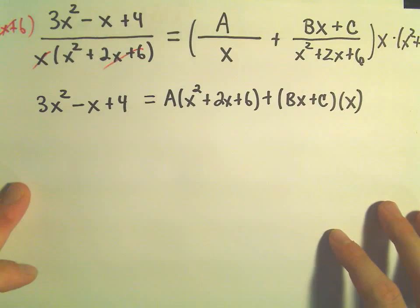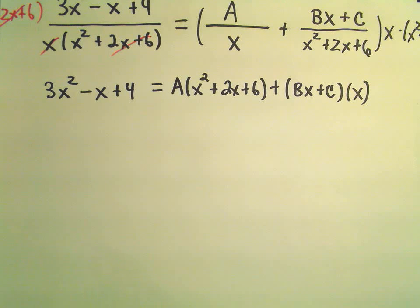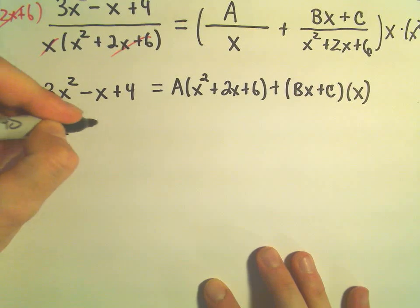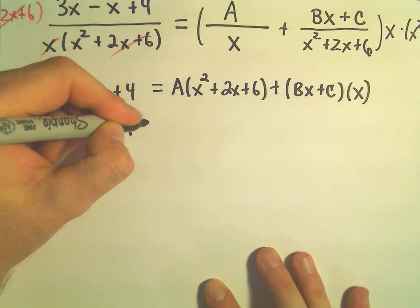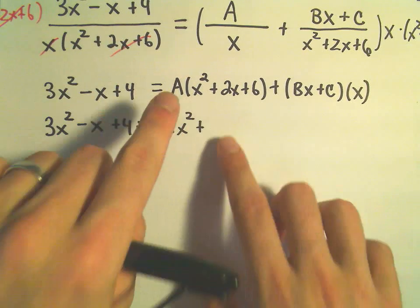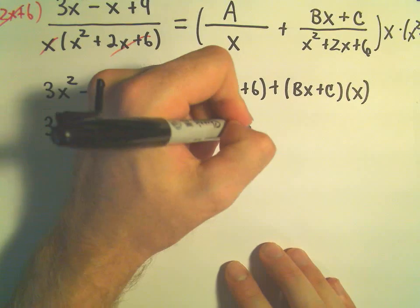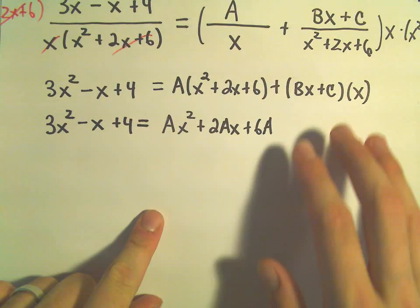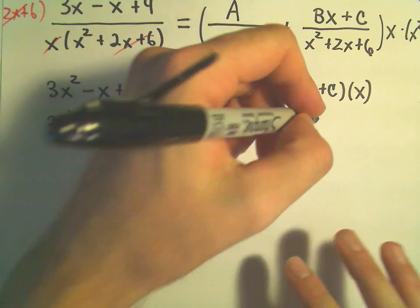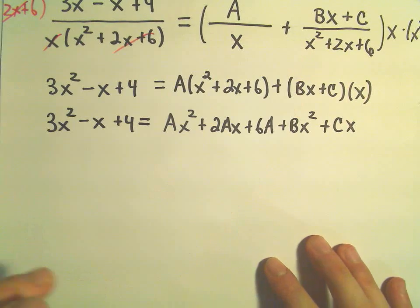Okay, so I've gotten rid of all of our fractions here. And now I'm going to do this process, again, of just equating coefficients. So on the left side, again, nothing to do. I'm just going to rewrite it. On the right side, I'm going to get rid of the parentheses. So if we distribute, we'll get Ax². A times 2x, I'm going to write that as 2Ax. We would get plus 6A. I have to distribute my x out on the right. So x times Bx would be Bx². And then we would get Cx.